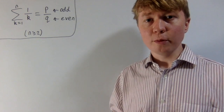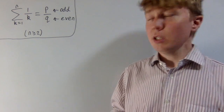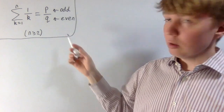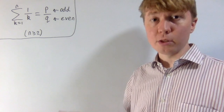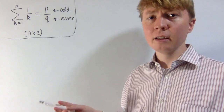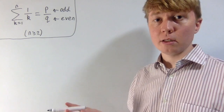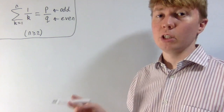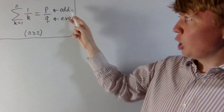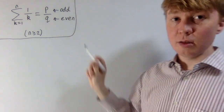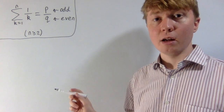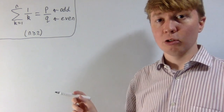So this is a nice little property of fractions. Basically what we're saying is, if you take the sum 1 plus 1/2 plus 1/3 plus 1/4 and so on up to 1 over n, and we write this as a single fraction and simplify that fraction, it's always going to be of the form an odd number divided by an even number, so long as our n is greater than or equal to 2.